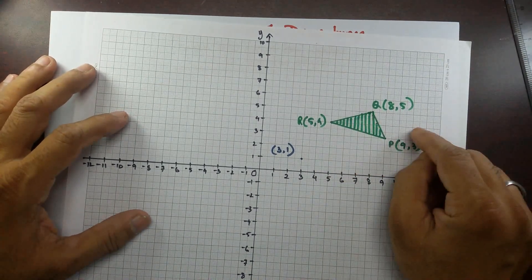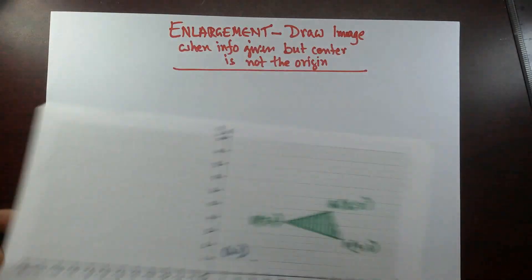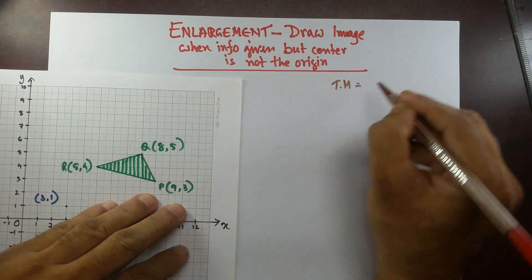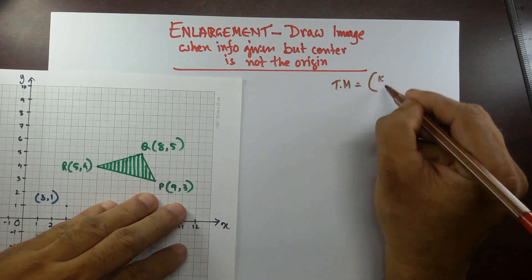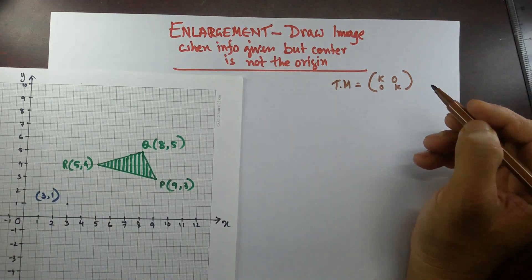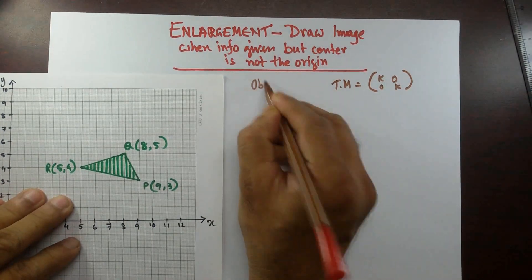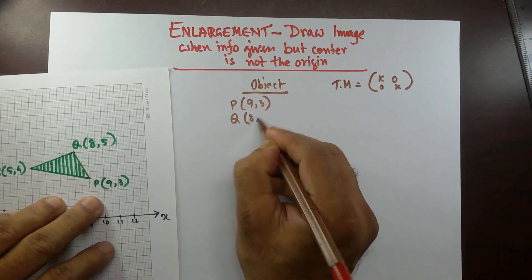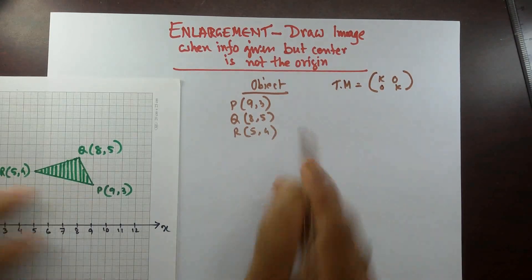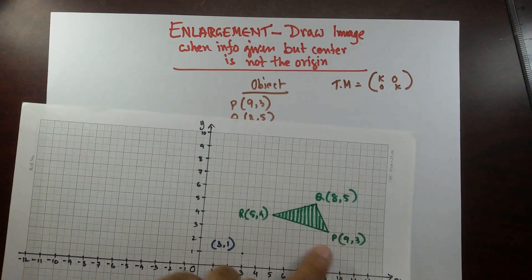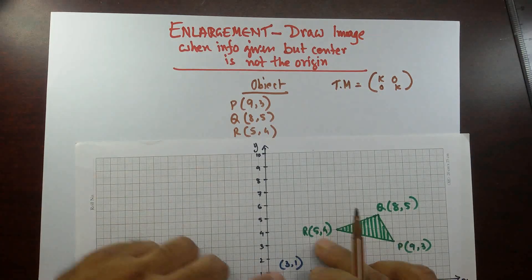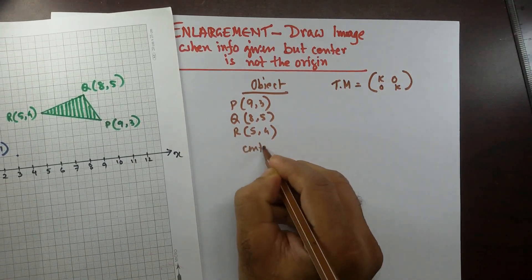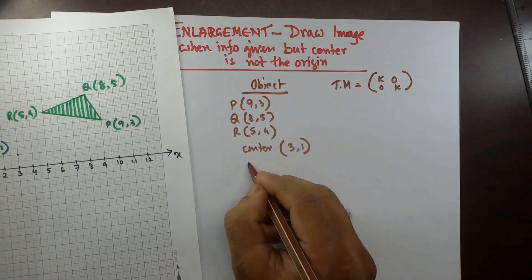In this case it's a little complicated — it's not a right angle triangle. My suggestion would be to use the transformation matrix again. The transformation matrix is [k, 0; 0, k]. The coordinates of the objects are P(9,3), Q(8,5), and R(5,4). The center of enlargement is given as (3,1) — not (0,0).